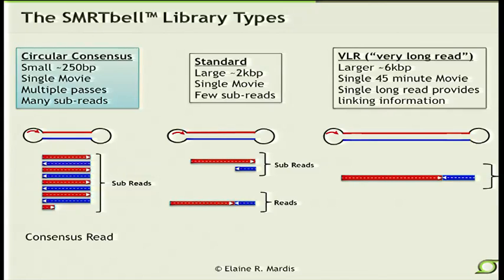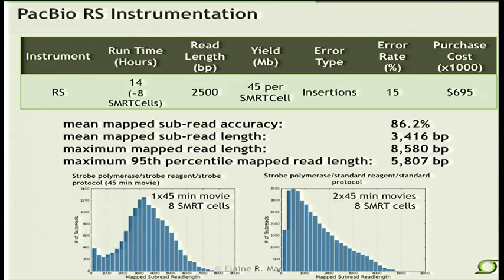If you want to run sequencing for longer, you take very large fragments — also with the SmartBell adapter — and sequence as long as you can during that 45-minute movie. The read length is really limited by the amount of data storage capacity on the movies because they're very large. The movies themselves never get stored — they get converted very quickly into a downsampled data file that gets operated on by the instrument software to do the base calling. With the latest chemistries, these can be very, very long reads — averaging about 3,500 base pairs in length for VLR libraries, with some out at around 8,000 nucleotides.